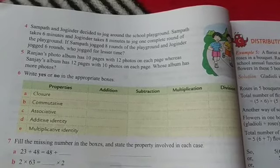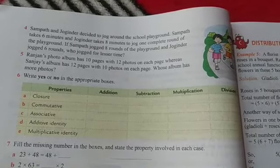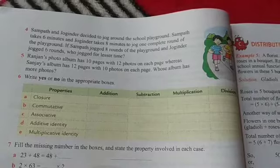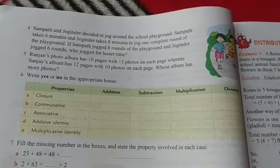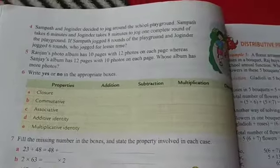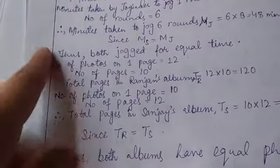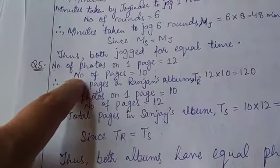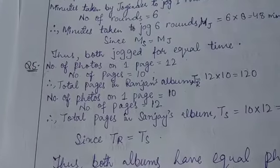Now question number five is: Ranjan's photo album has 10 pages with 12 photos on each page, whereas Sanjay's album has 12 pages with 10 photos on each page. Which album has more photographs? See, number of photos on one page, different number of pages, that is 10. So total number of pages...